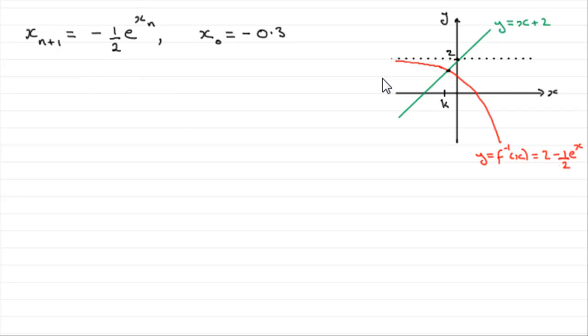Just before we start, what I've done is outline what this is all about. At the end of this video I'll show you how they got this iterative formula, but basically they're saying this is the iterative formula which gives us the value x equals k where the graph y equals x plus 2 intersects the graph y equals the inverse function f to the minus 1 of x, which was 2 minus a half e to the power x.